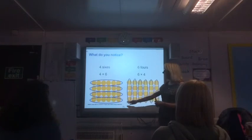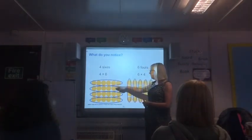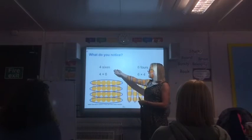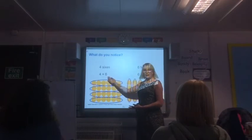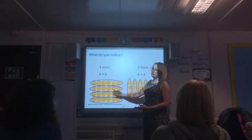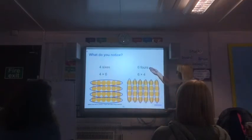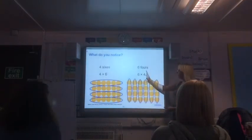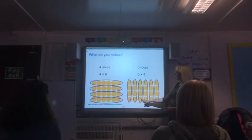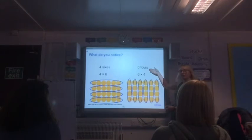So in this one we have four sixes — one six, two sixes, three sixes, four sixes. Can you say 'four sixes'? Four sixes. This is the equation to represent what we've just said and what's on the board. In this one we have six fours — one four, two fours, three fours, four fours, five fours, six fours. And here's the equation to represent what we said out loud and what the image represents.